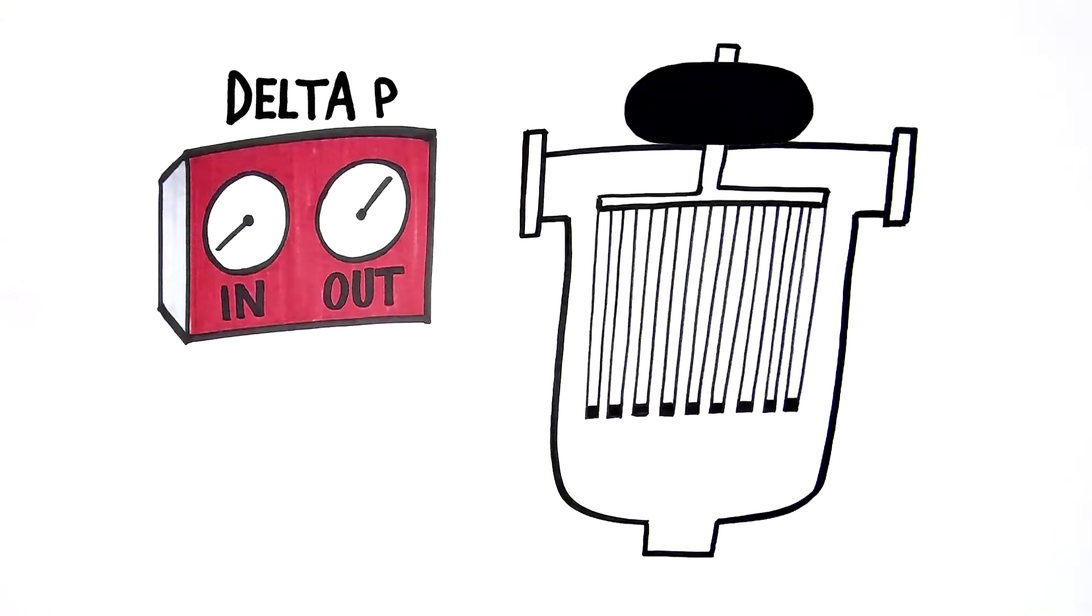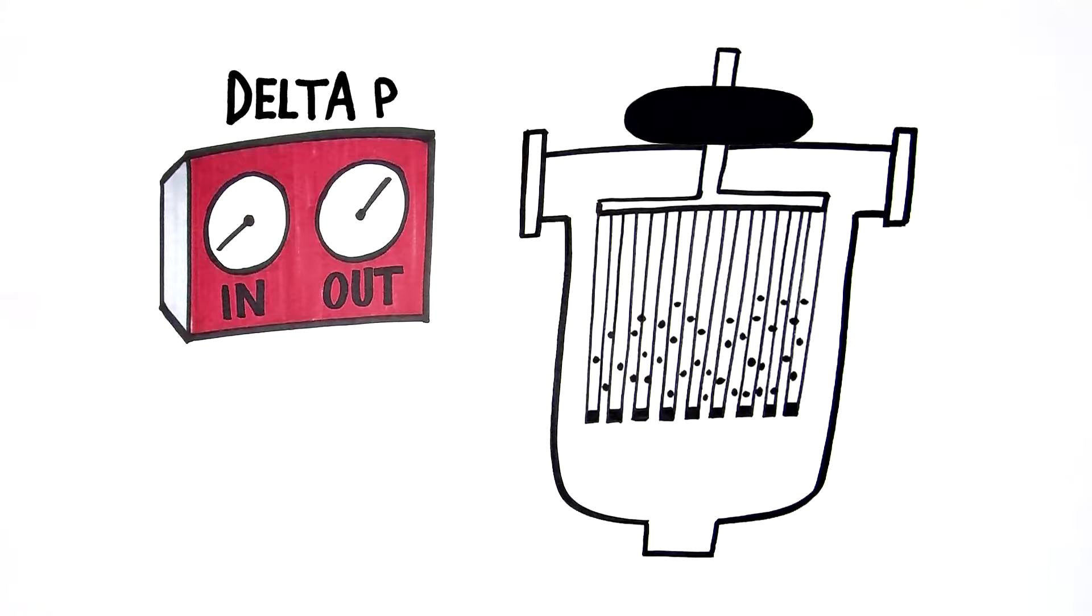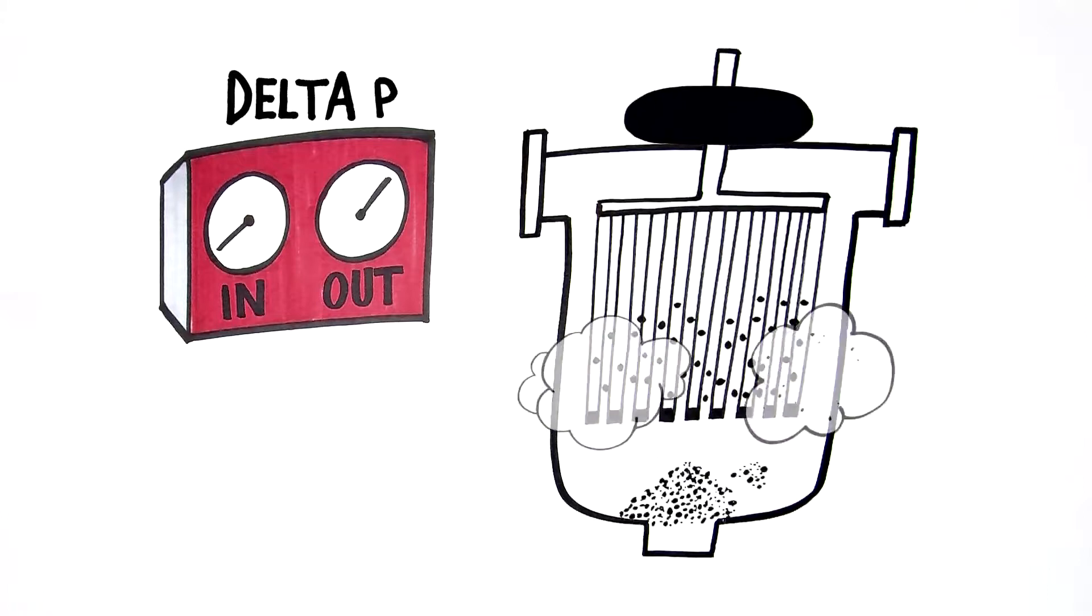As the perlite becomes loaded and pressure differential increases, a controller initiates a bump process that regenerates the media and gives it a fresh start.